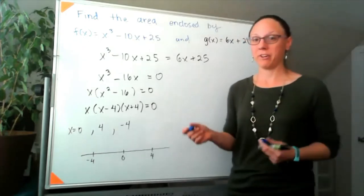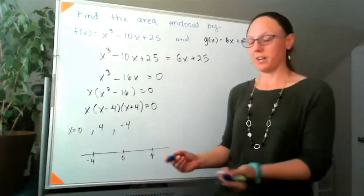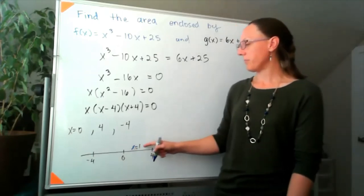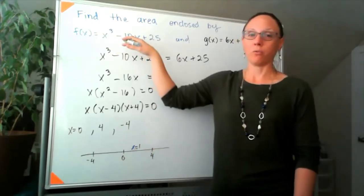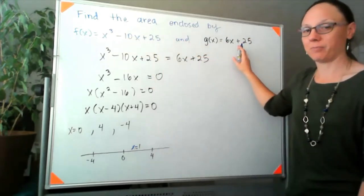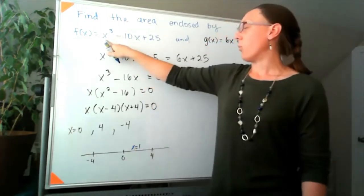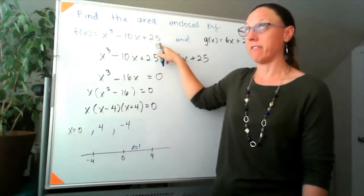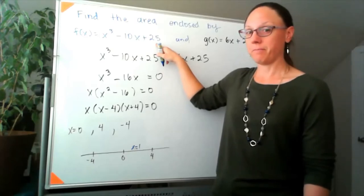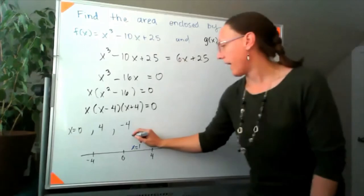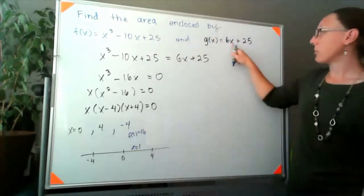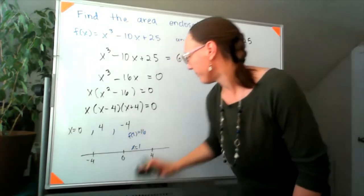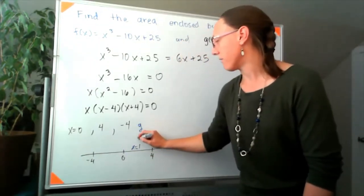We're going to do this without a graph, and the only way I know to do that is to plug in a number. So if I pick something between 0 and 4 — I'm going to pick x = 1 — I just need to know: at x = 1, is the y-value from the cubic bigger, or is the y-value from the line bigger? Plugging into the cubic: 1 - 10 = -9, plus 25 gives 16. So f(1) = 16. I plug 1 into the line: 6 + 25. It doesn't matter what it is — it's bigger than 16. So I know in this region, g is on top and f is on the bottom.